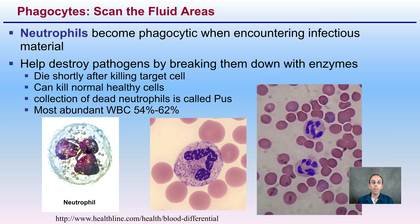A downfall is that neutrophils can also kill normal, healthy cells. A collection of dead neutrophils is called pus — if you've ever had that kind of area under the skin that you poke and pus comes out, that's actually a lot of neutrophils. They are the most abundant white blood cells, accounting for about 54% to 62%, and are the first to respond to an infection, though they're not quite as selective as macrophages.